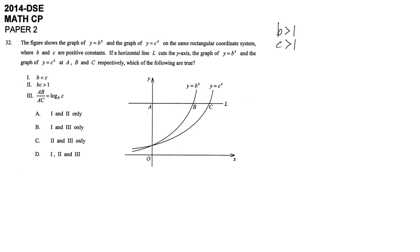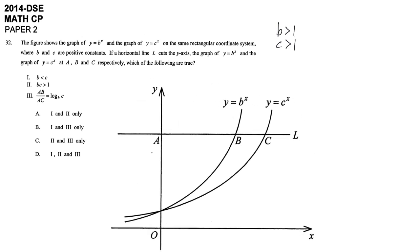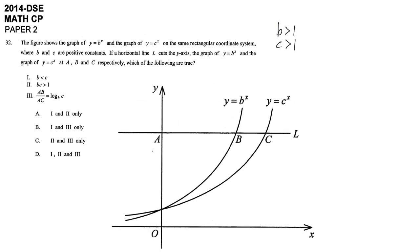But of course, by using the graph, then how can we find out what is representing b and c? We may consider a specific case when x is equal to 1. Then at this point we will get b to the power of 1. That means the height here is b to the power of 1.